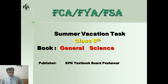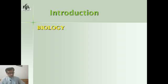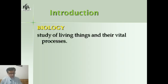General Science, KPK textbook board Peshawar. Unit number 1: Human Organ System. This is lecture number 1. First of all, let me introduce the chapter. This chapter belongs to a branch of science called biology. Biology is a combination of two words: 'bio,' which means life, and 'logi,' which means study.